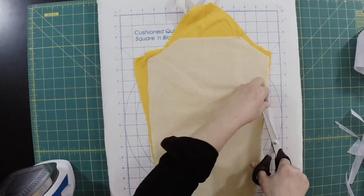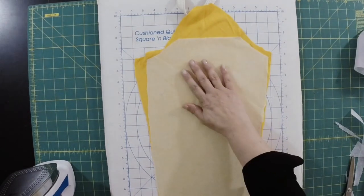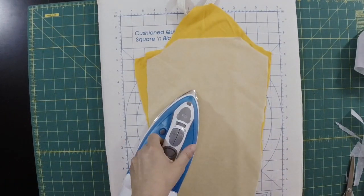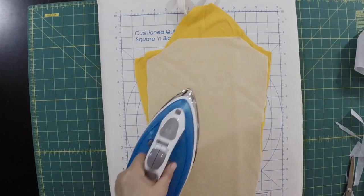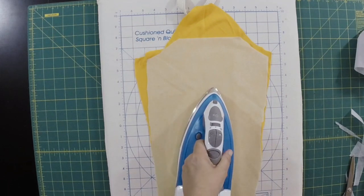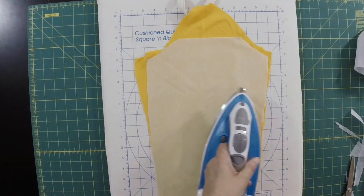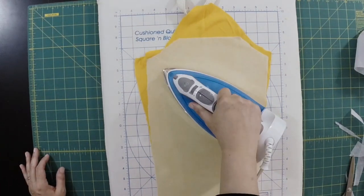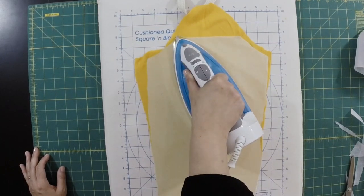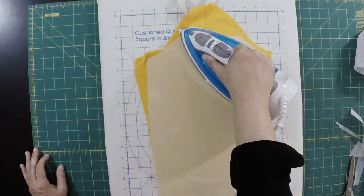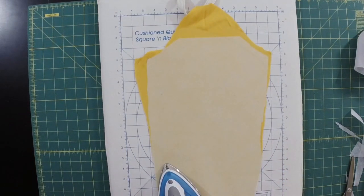So what you're going to do with no steam, and I'm going to use a cotton setting. And the other thing is you're going to leave the iron in place for a few seconds, then raise it up, move it. You don't want to iron, you want to press.